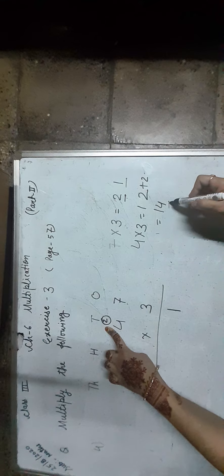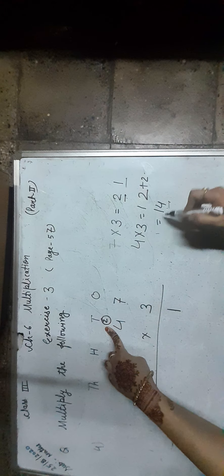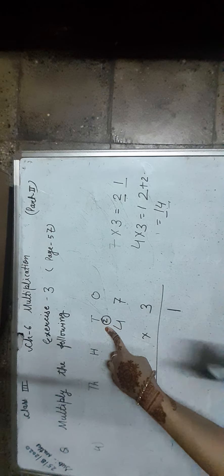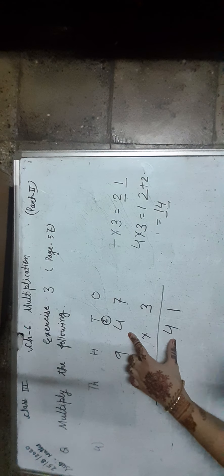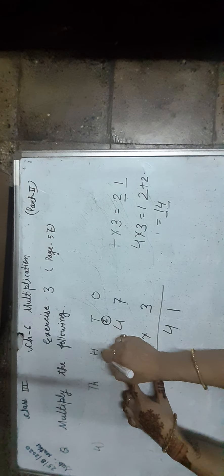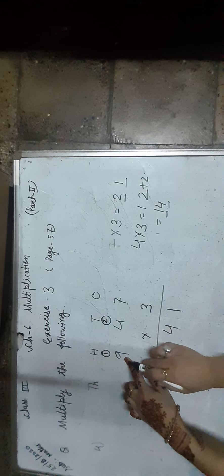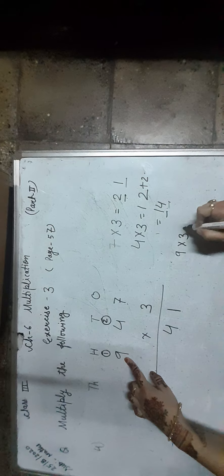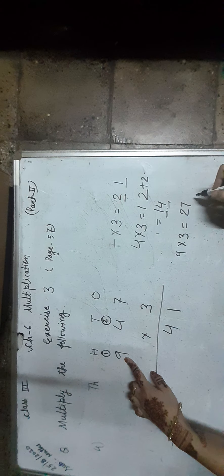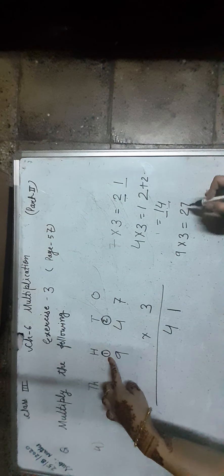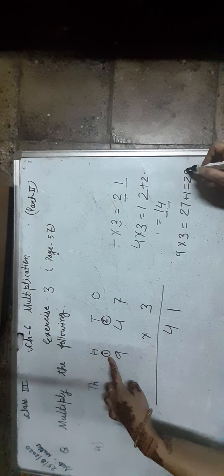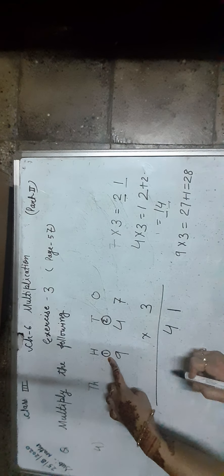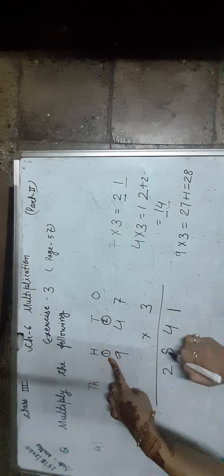14 means 4 tens and 1 hundred. So we write 4 in the 10s place and carry 1 over to the 100s place. Now, 9 × 3 is equal to 27, plus 1 carry over, together 28. So we write 28 at last.